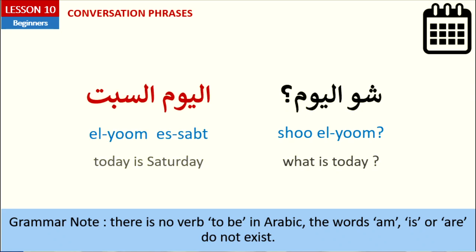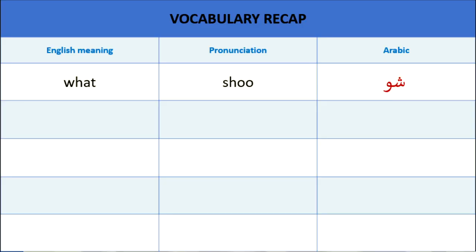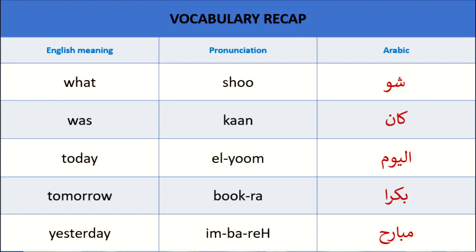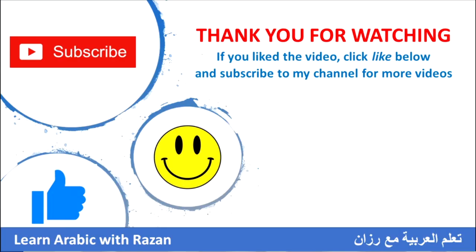اليوم السبت — Today is Saturday. Now I will repeat all the words: 'What is today?' شو. 'Was' — كان. 'Today' — اليوم. 'Tomorrow.' 'Yesterday.' That's all for today, thank you very much for watching. I hope you enjoyed it. Yalla, bye!